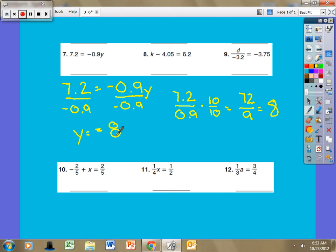If I wanted to check this work, which is always a great idea, I am then going to substitute it back into the original equation. So now I know that y is equal to negative eight. I could then say, hey, negative nine tenths times eight. Because remember, I'm solving the original equation now, not this 72 divided by nine.